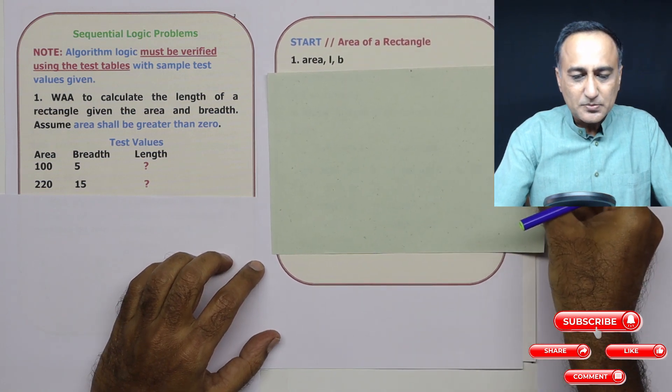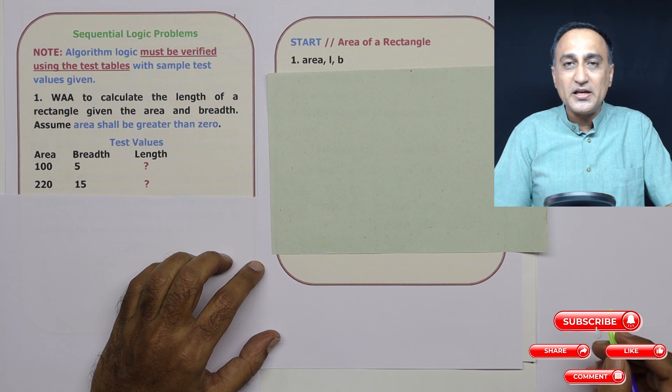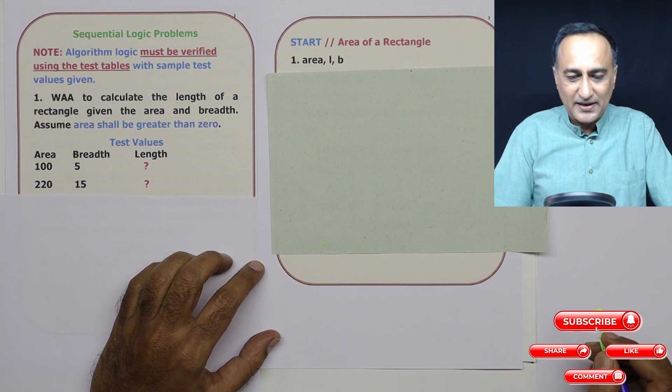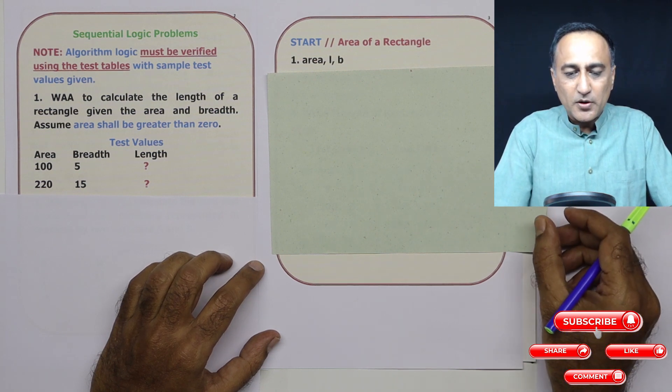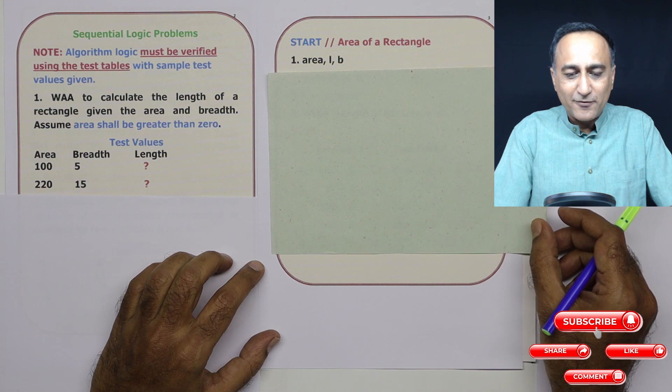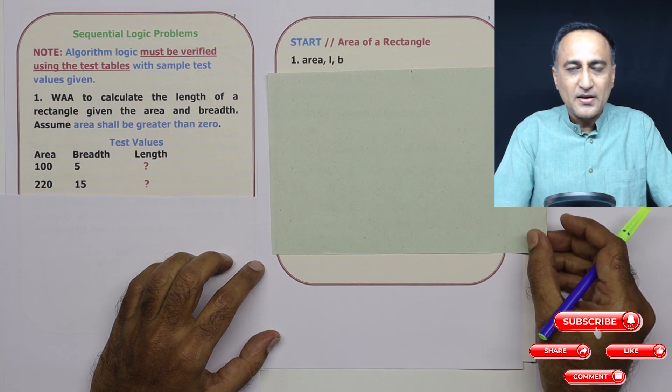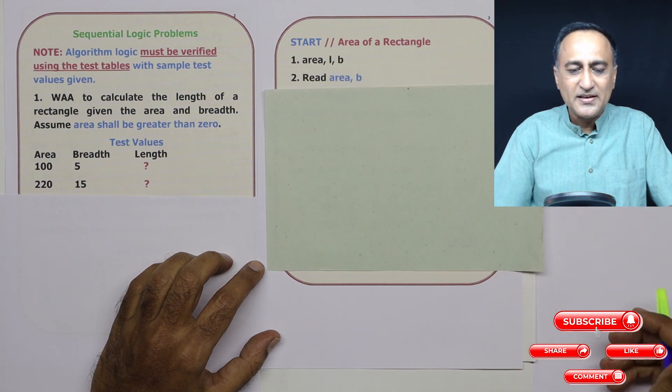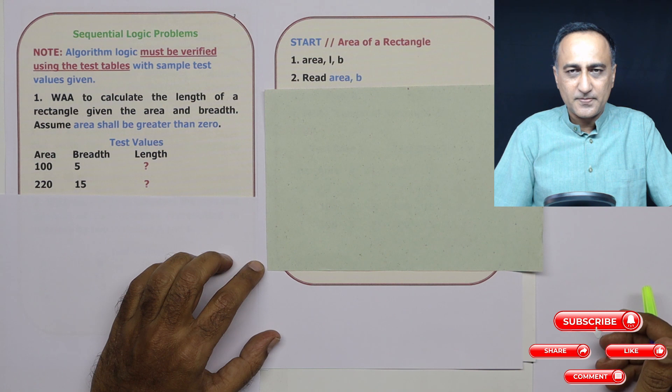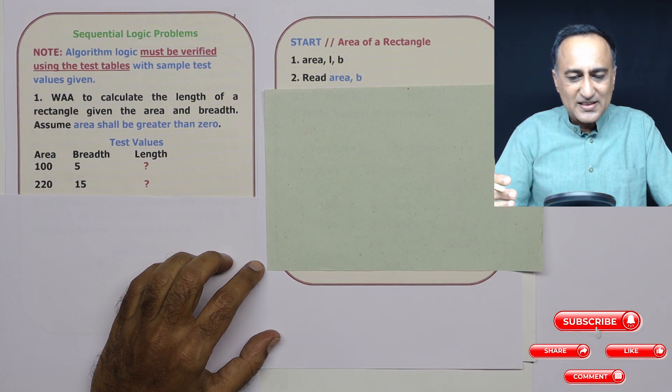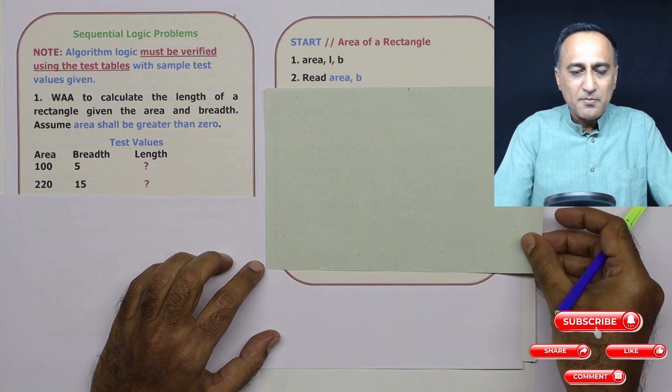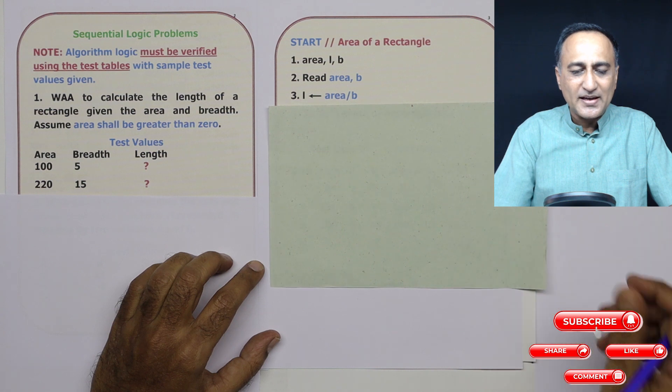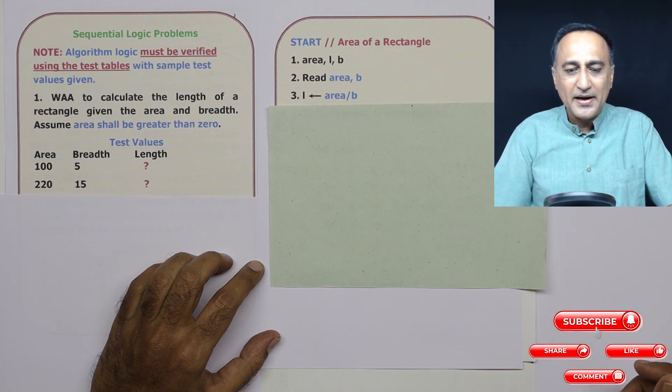First, determine the variables: area, L for length, and B for breadth. I need to ask the user to enter the area and breadth. Once the user enters them, I calculate the length as area divided by breadth.